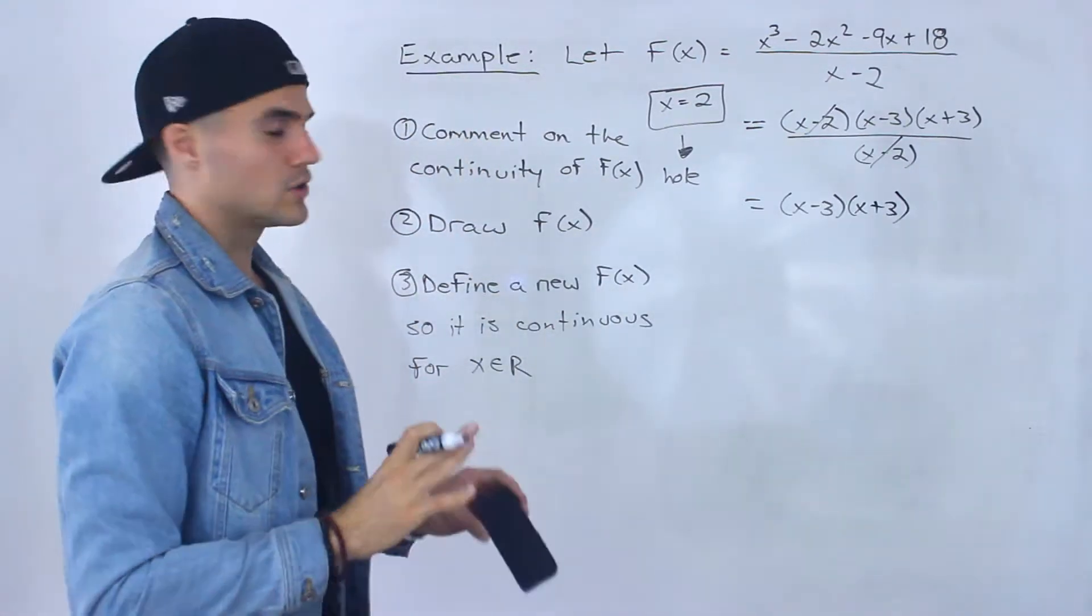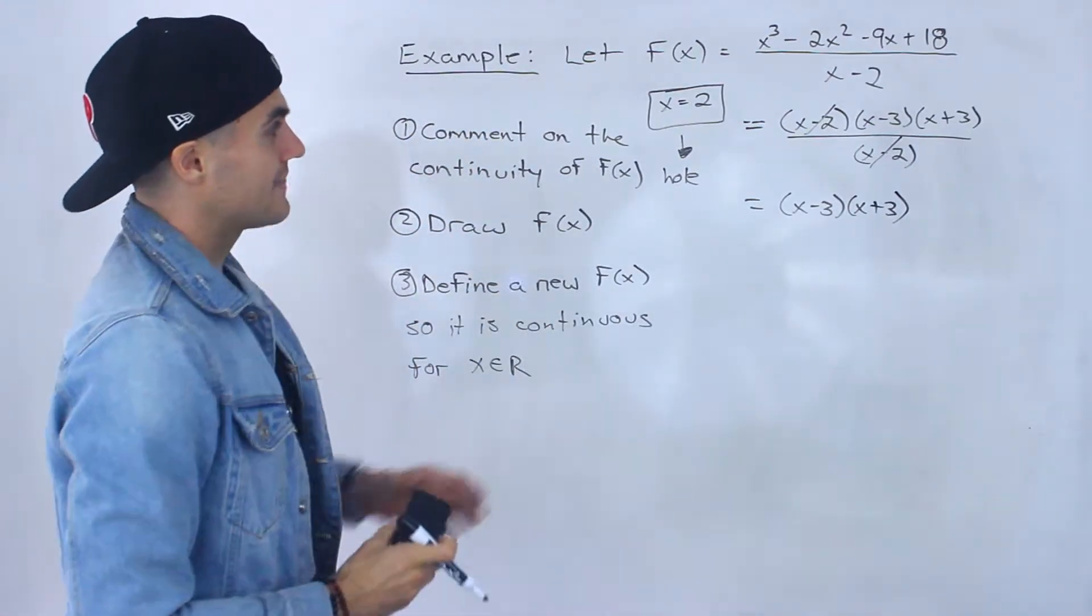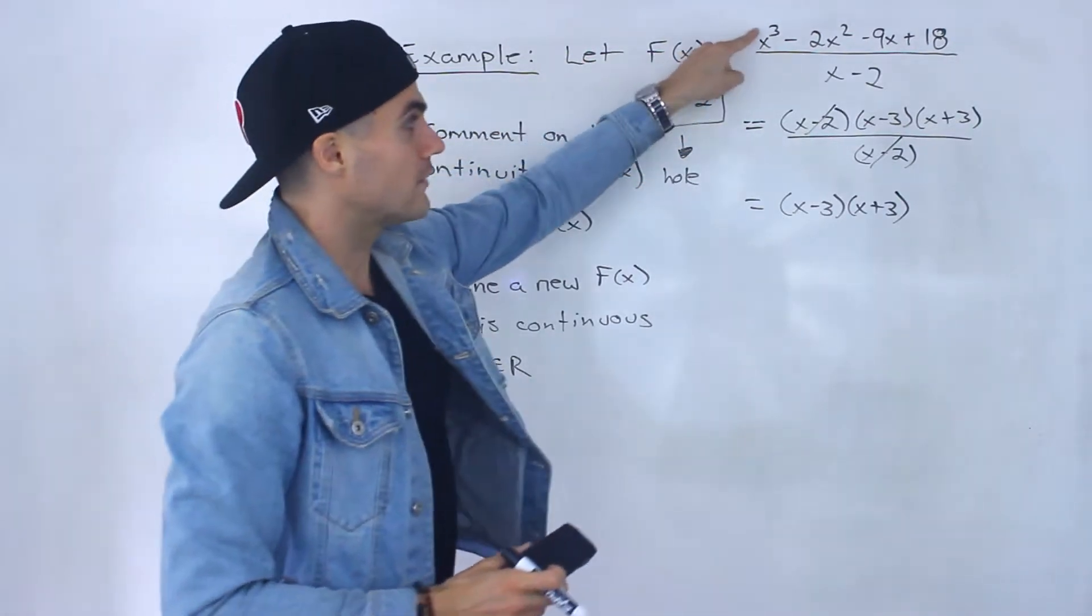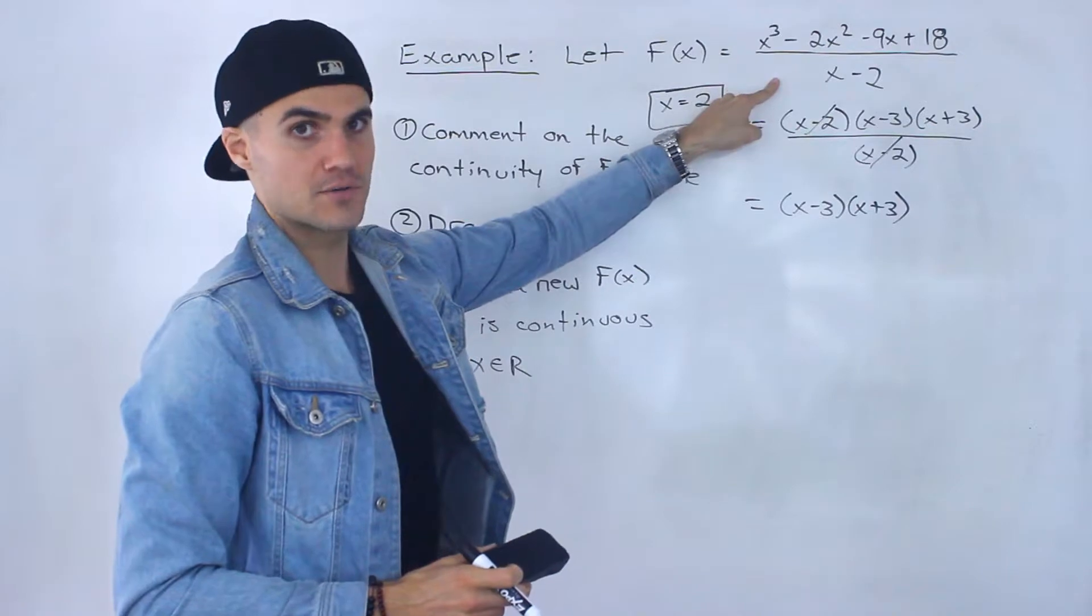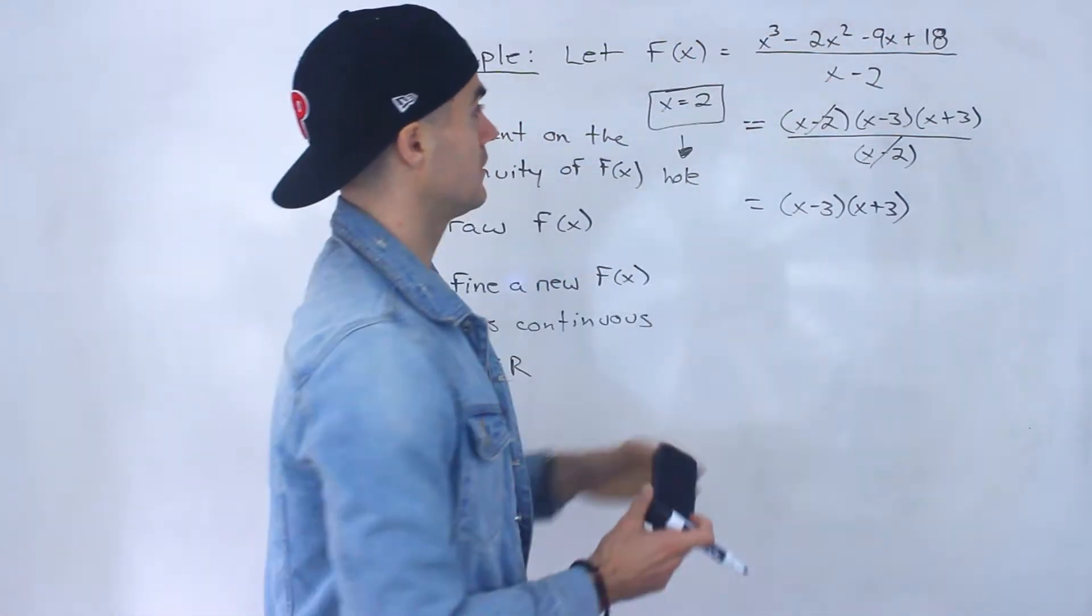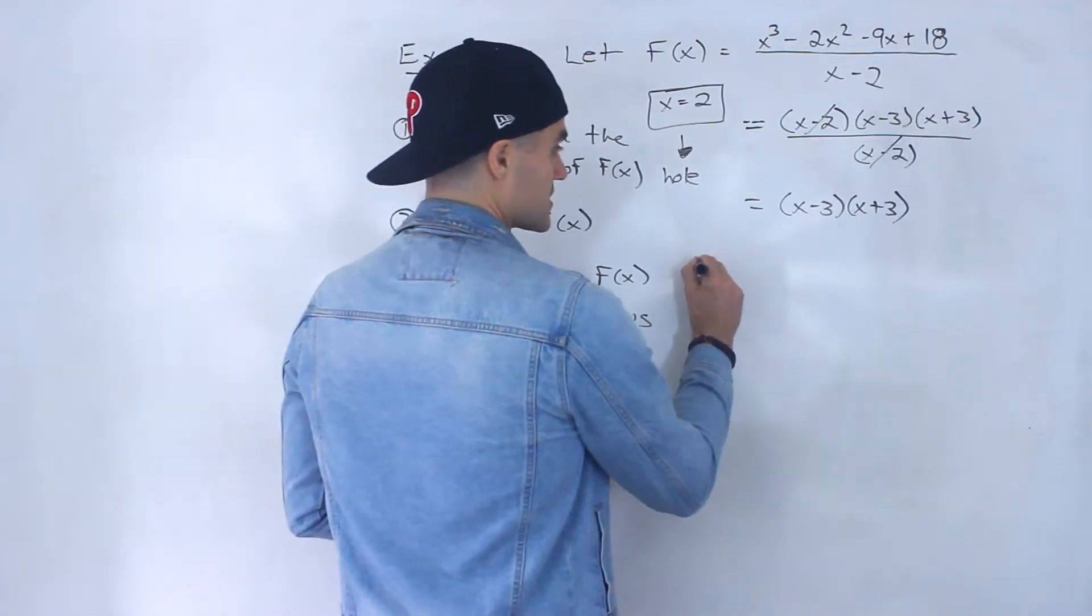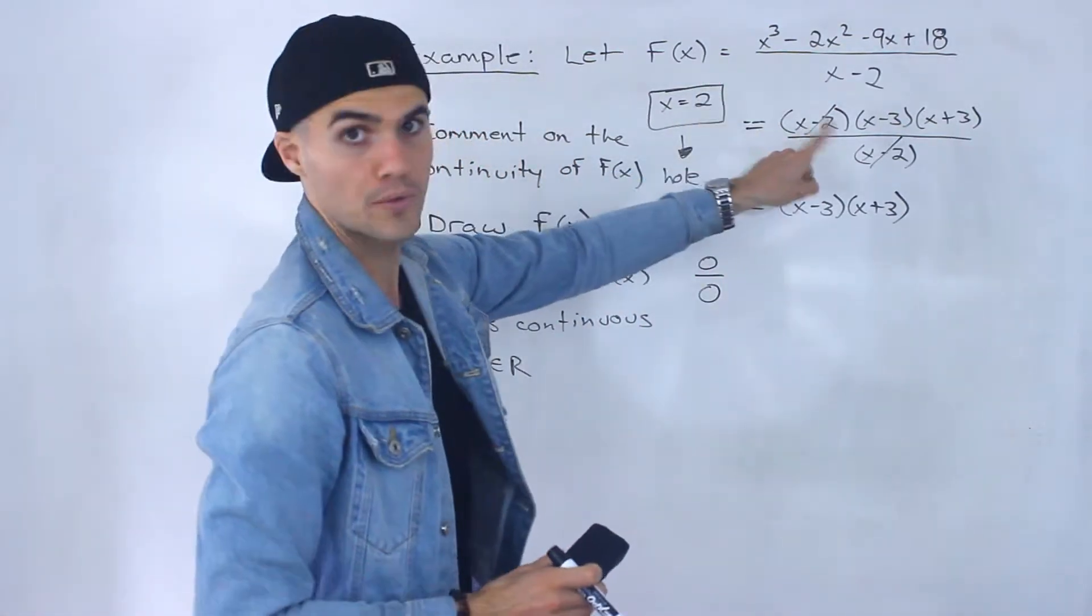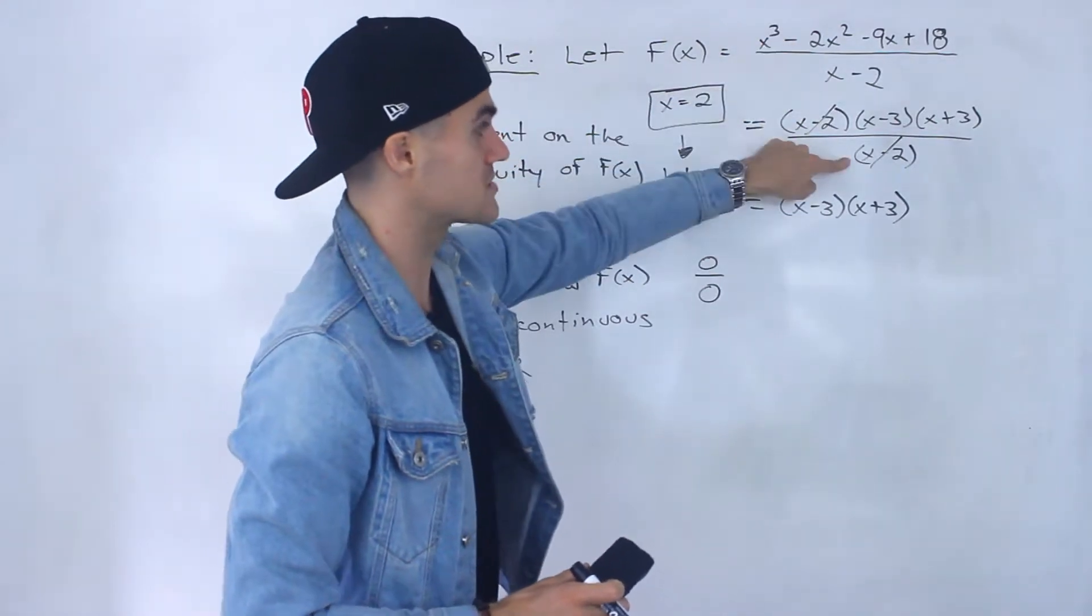Another way to look at this is that at this x value of 2, the numerator and denominator are 0. Notice if we take this 2 and we plug it into the original function, we would end up with this form 0 over 0. You can see that over here, 2 before we cancel out. This bracket would be 0, this bracket would be 0.